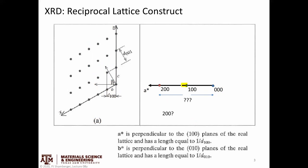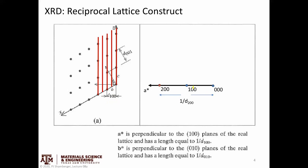Continuing further, the 2, 0, 0 reciprocal lattice vector is in the same direction but twice the length, which makes sense because the 2, 0, 0 plane intercepts the x-axis halfway between the origin and the 1, 0, 0 plane — so it has half the D spacing, meaning twice the reciprocal length. The nice thing is that once I've created one reciprocal lattice vector, I can get to any other reciprocal lattice point by linear combinations of the vectors, just as in real space.